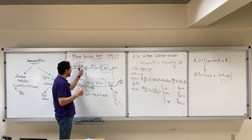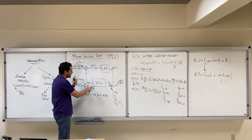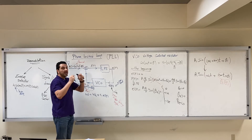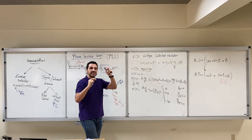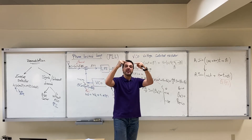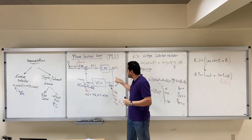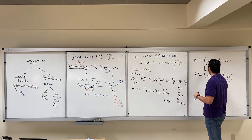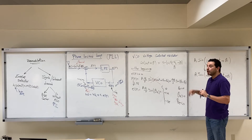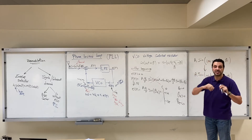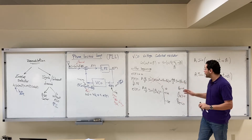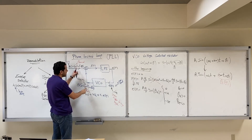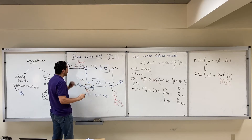The error signal will keep track of theta_i, being proportional to the difference between theta_i and theta_naught. This error signal updates the phase at the output of the VCO, allowing them to track each other. As theta_i is changing, theta_naught also changes with time due to the feedback connection, so even if the incoming frequency changes due to the Doppler effect, the feedback loop will be able to synchronize.